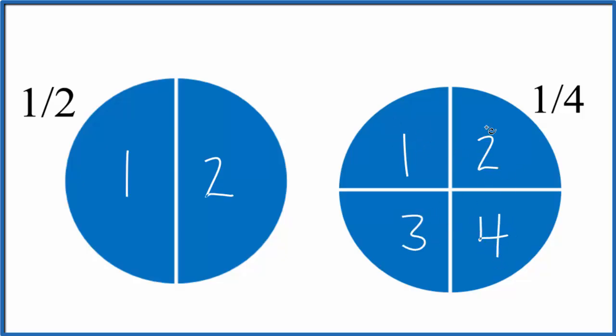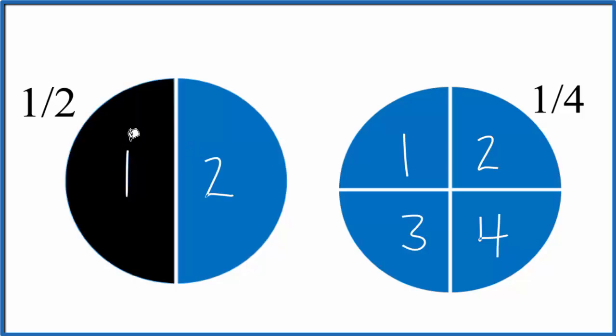So let's shade in half of this circle, one piece. So this is one-half here. Over here we'll shade in one piece out of the four, the part of the whole. So this is one-fourth.